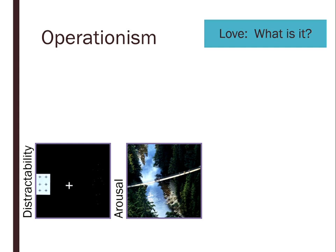Men also told more romantic stories about the picture when they were on the suspension bridge than on the sturdy bridge. One interpretation is that when you're scared — we call it arousal, heart rate up — you look around your environment and ask why am I feeling like this. The obvious explanation is you're on a suspension bridge, but if you could say it's because this attractive woman is giving me her phone number, it might feel like attraction instead of just fear. They found evidence for this in the stories the men wrote and in the fact that they were more likely to call her if they had met her on the rickety bridge.